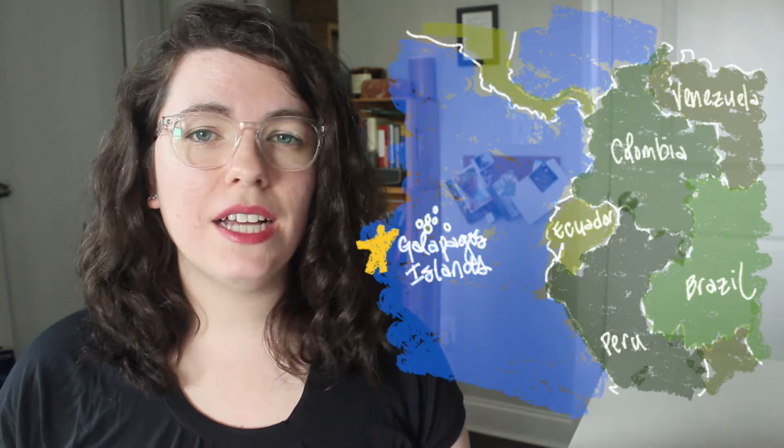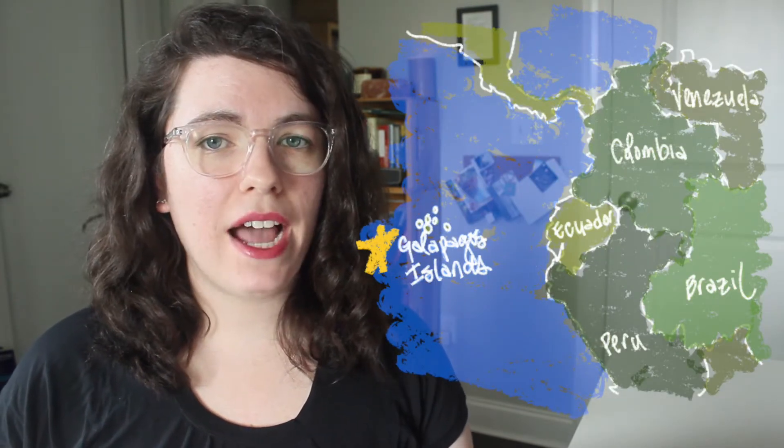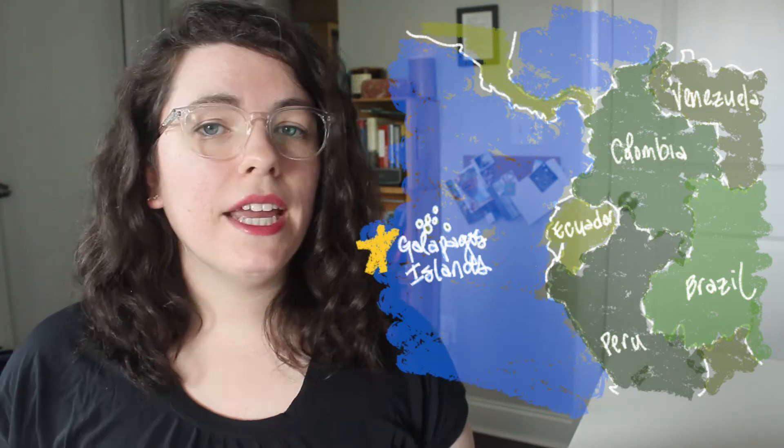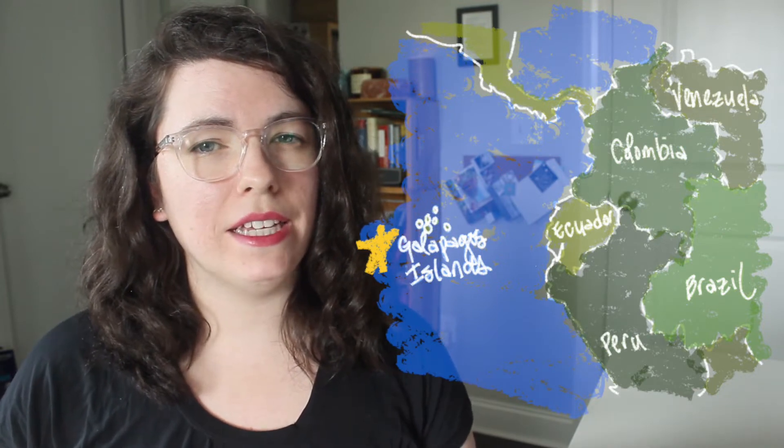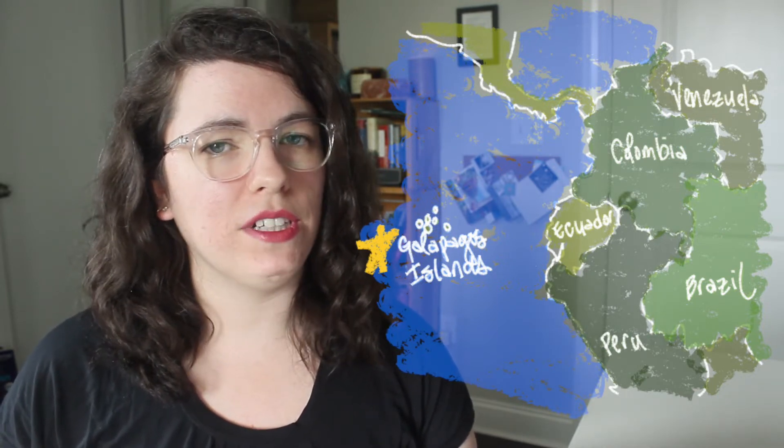In 1831, a British naturalist you may have heard of, Charles Darwin, set sail on a five-year trip around the world. His task on this journey was to document all of the living things that he encountered. On this trip, Darwin famously visited the Galapagos Islands, a set of Pacific islands off the coast of South America. Here, Darwin noticed that animals on the islands were similar to animals he had seen on the mainlands, but with some notable differences.